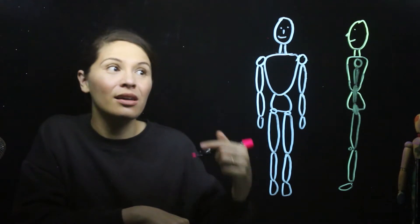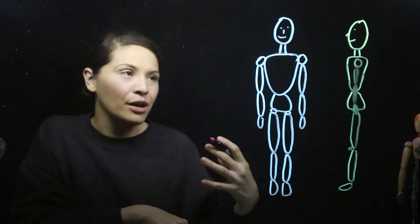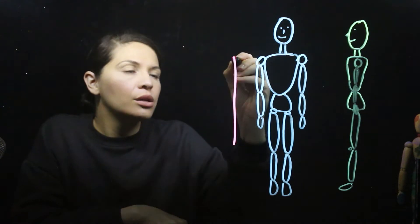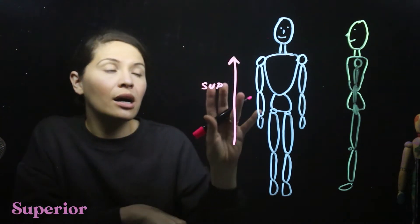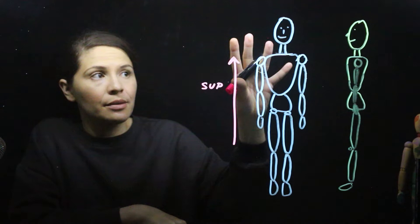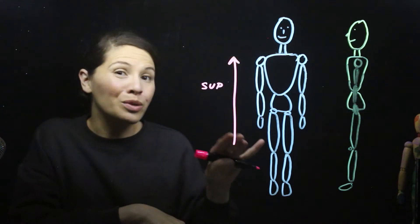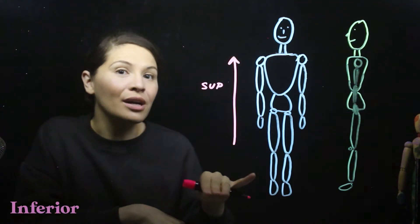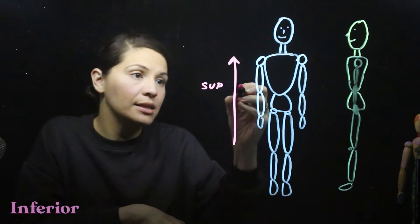So let's start with superior and inferior. Superior means towards the head, and the opposite of superior would be inferior — things that are going towards the feet.